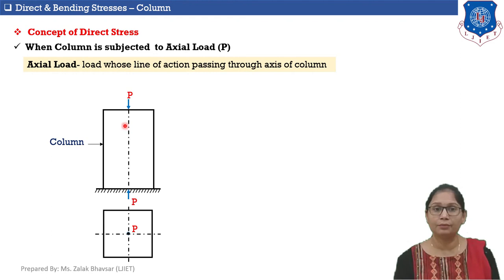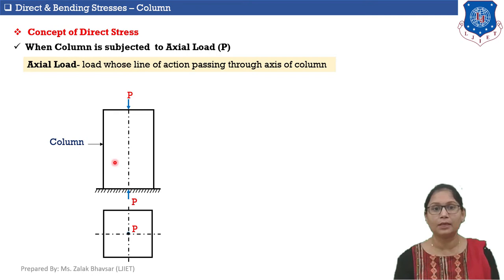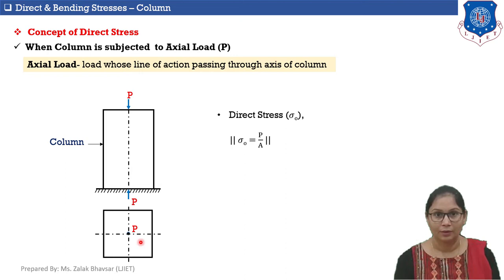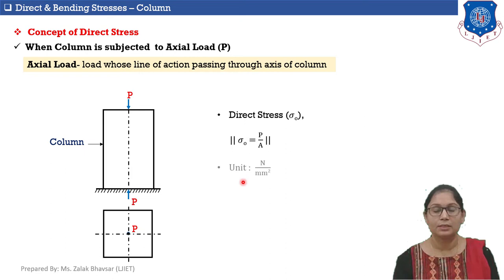In the given figure, the column section is subjected to load P whose line of action passes through the axis of the column, so this column section is subjected to axial load. Because of the axial load, direct stresses will be developed. Direct stresses are denoted by σ₀ = P/A, where P is axial load and A is cross-sectional area of the column. The unit of direct stress is Newton per mm².